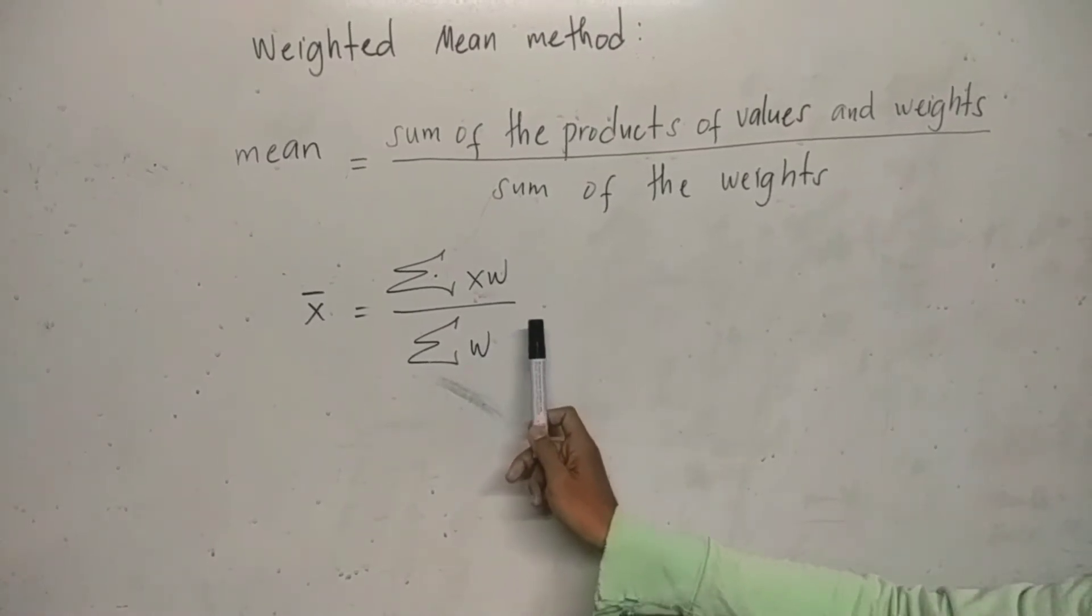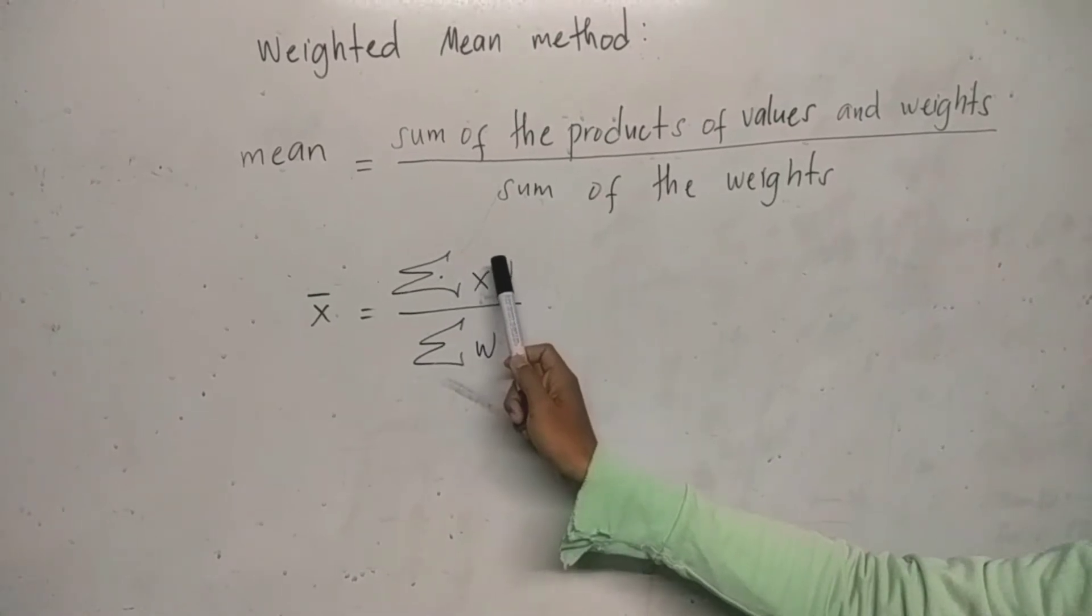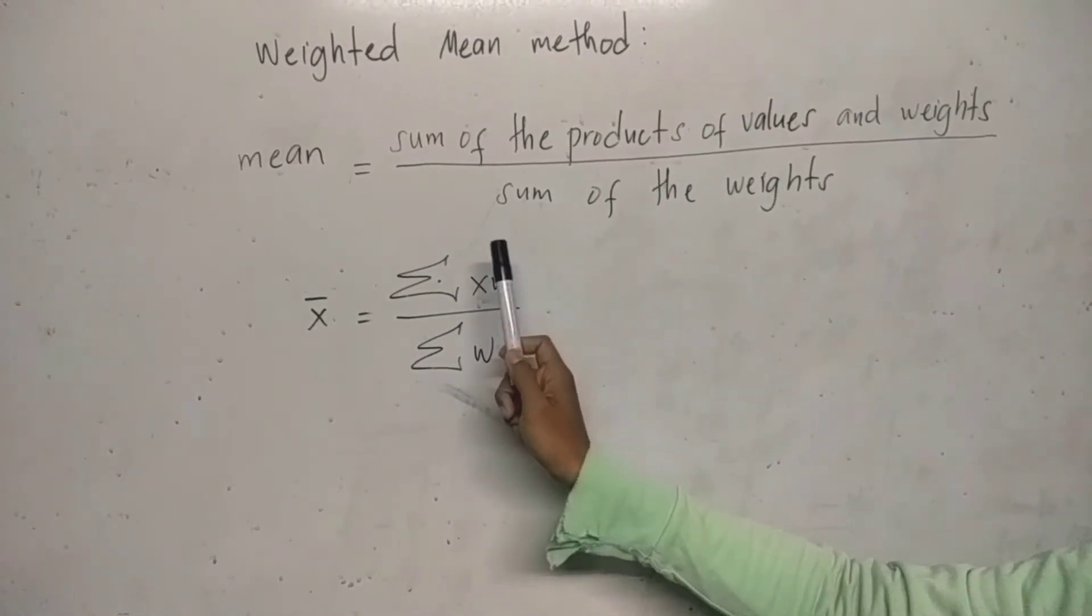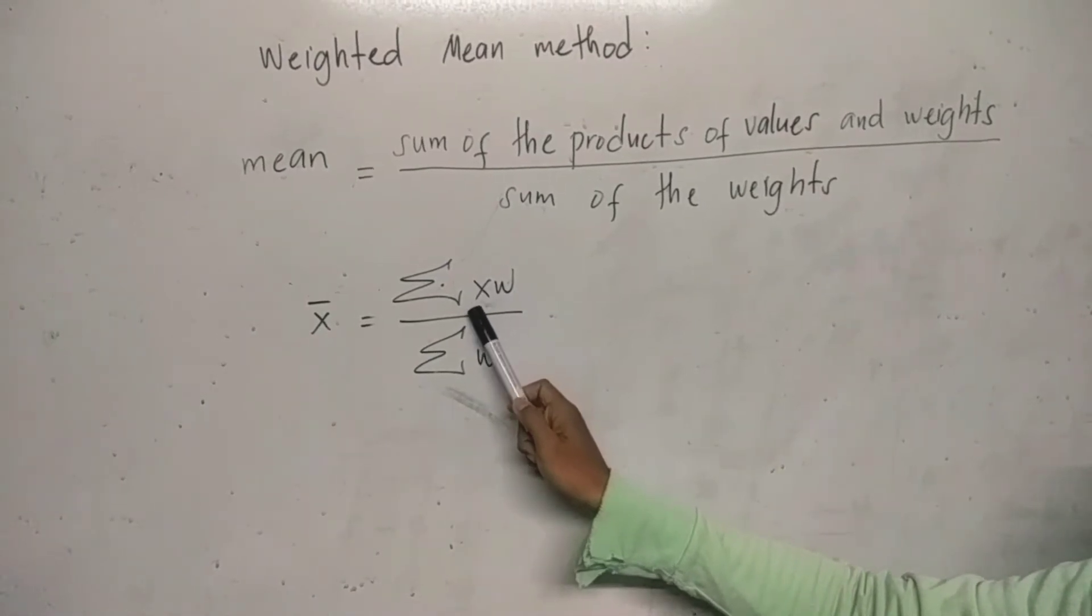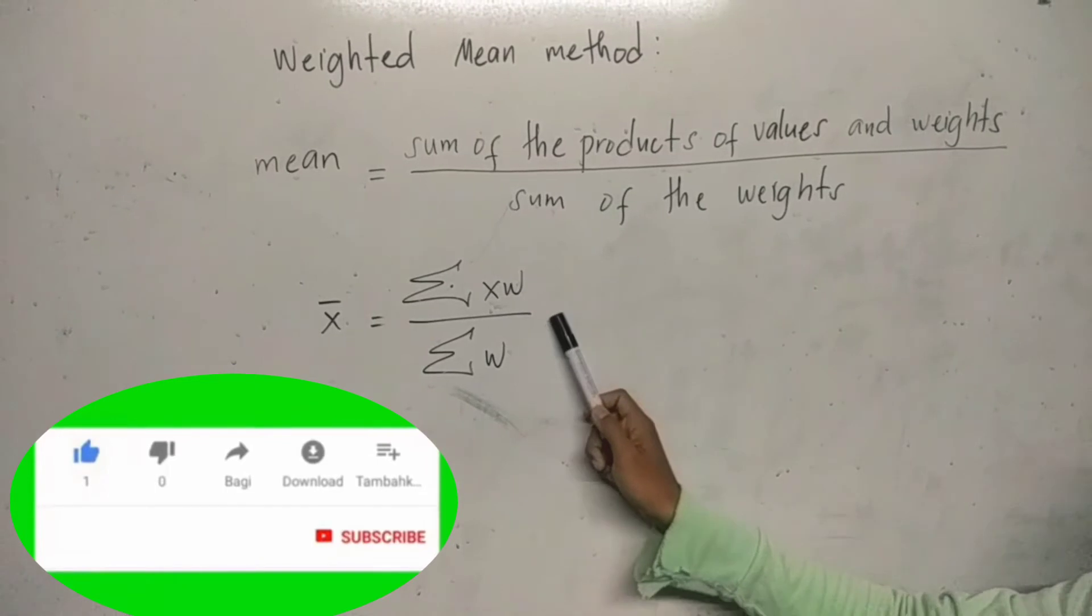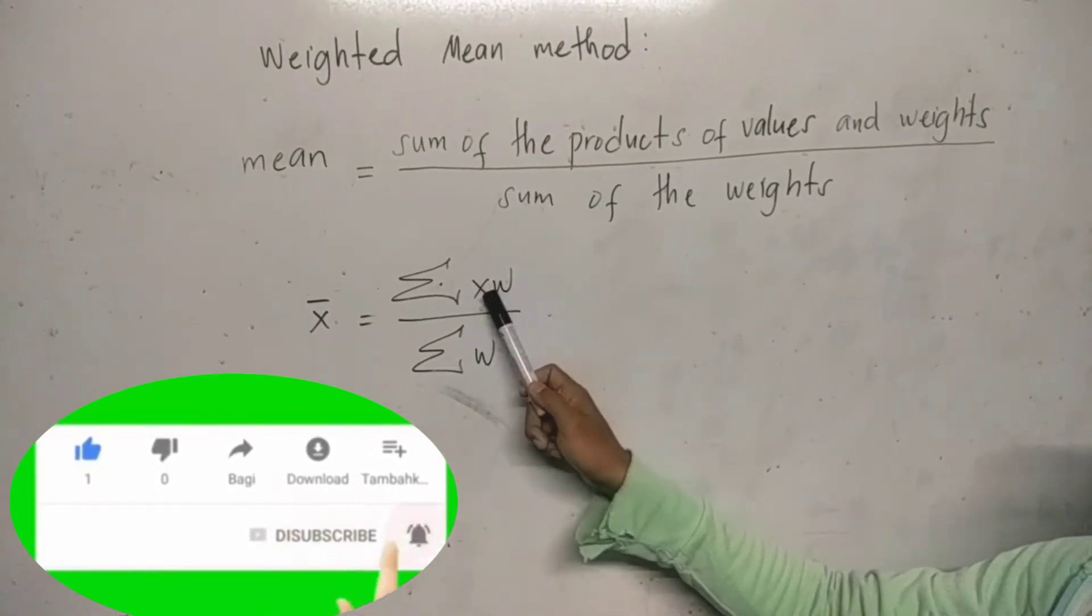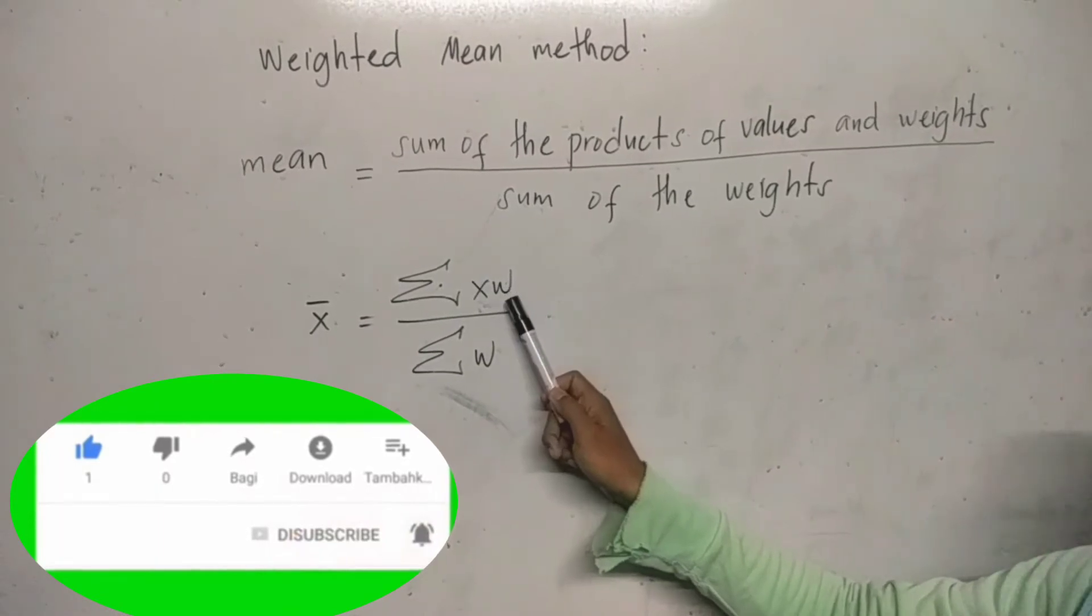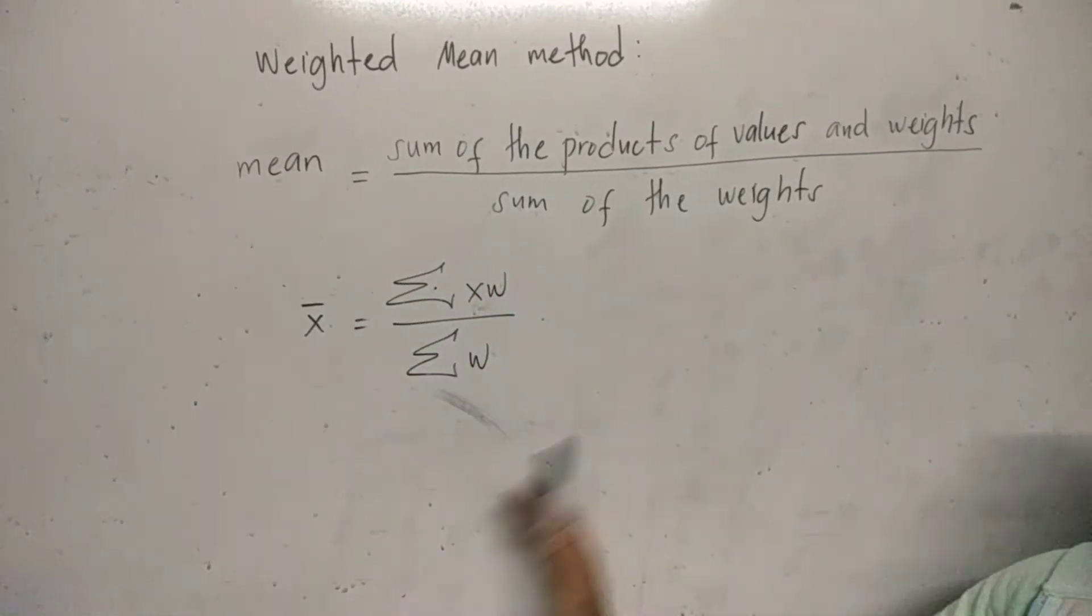The x here is the values and w here is the corresponding weights of the values. Again, x is the values and w is the corresponding weights of the values. This is the formula of weighted mean.